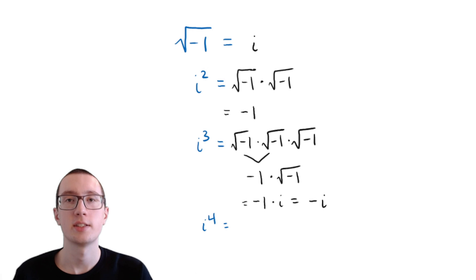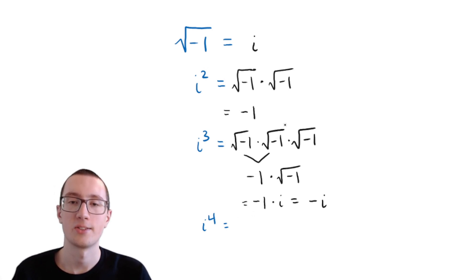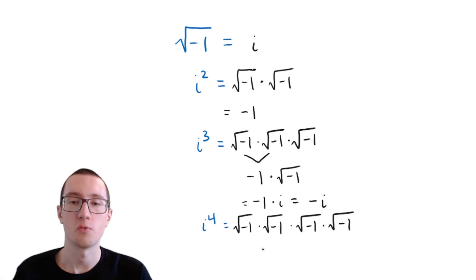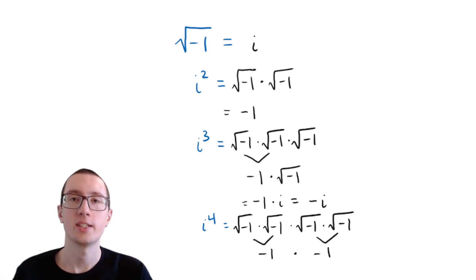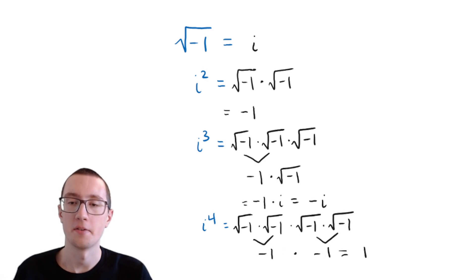Negative 1 times something just means putting a negative sign on it, so i cubed is negative i. And finally, what is i to the fourth? Two square roots of negative 1 make negative 1, so we have negative 1 times negative 1, which is 1. That means i to the fourth just turns into 1 — it basically cancels itself out.